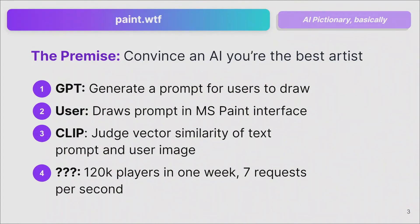The third component is CLIP, which judges the vector similarity of the text embedding of the prompt and the image embedding. Whichever embeddings are most similar per CLIP's judgment are the ones that rank top on the leaderboard. People love games and the internet, so it went mini-viral across Reddit and Hacker News in its first week. 120,000 players played it in its first week, and at peak we were processing seven requests per second.